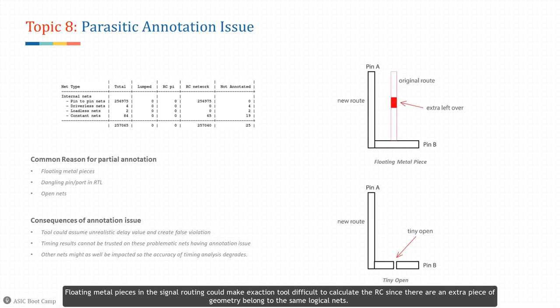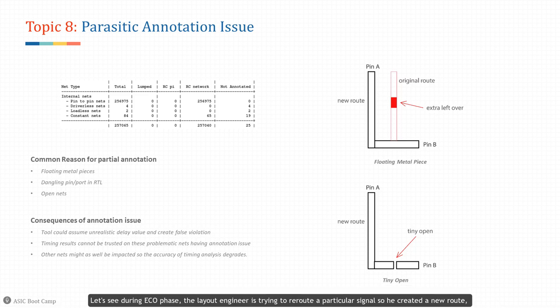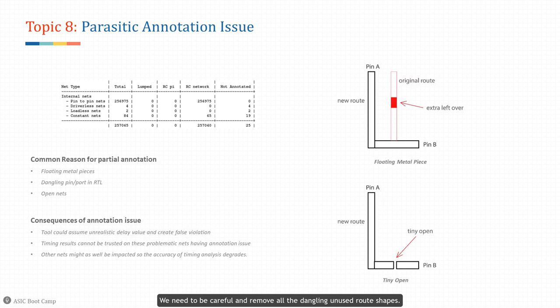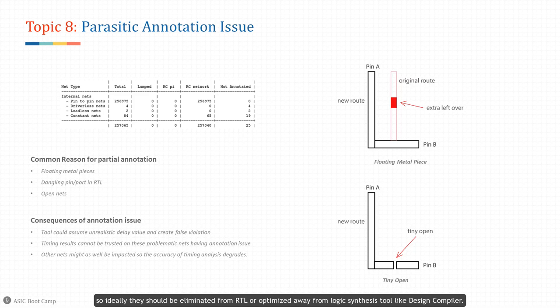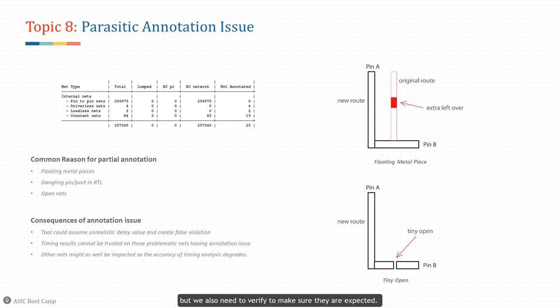Floating metal pieces in signal routing could make extraction tools difficult to calculate RC, since there is an extra piece of geometry belonging to the same logical nets. For example, during ECO phase, a layout engineer trying to reroute a signal creates a new route but forgets to remove all of the original route, leaving over a small piece of metal. Even a small piece of extra metal could cause partial parasitic extraction issues — we need to remove all dangling unused route shapes. Dangling ports and pins in RTL could confuse the tool as well. Without knowing the driver and load, timing analysis can't be done correctly on those nets; ideally they should be eliminated from RTL or optimized away from logic synthesis tools like Design Compiler.